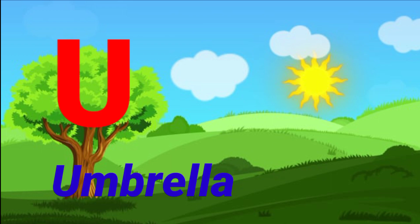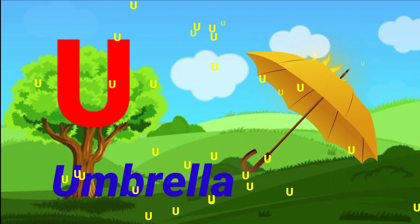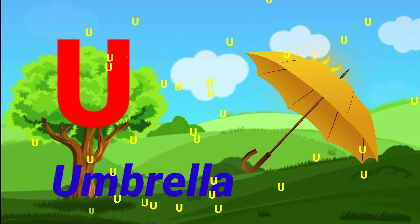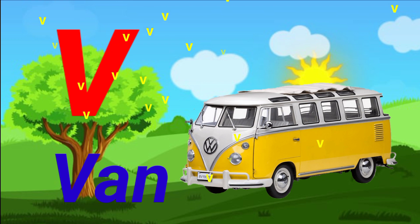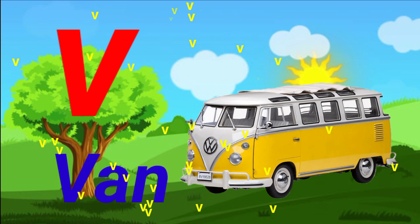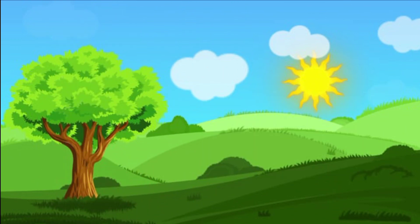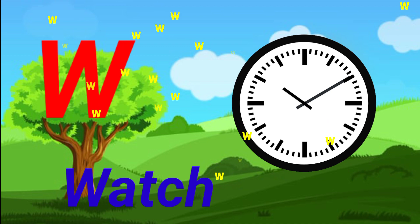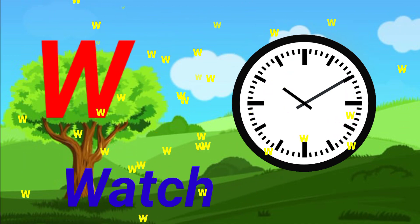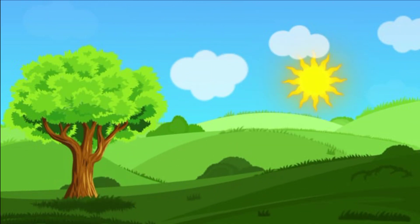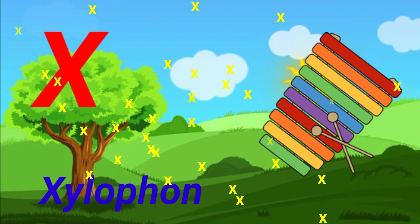U for umbrella, D for ven, W for horse, X for gylo.